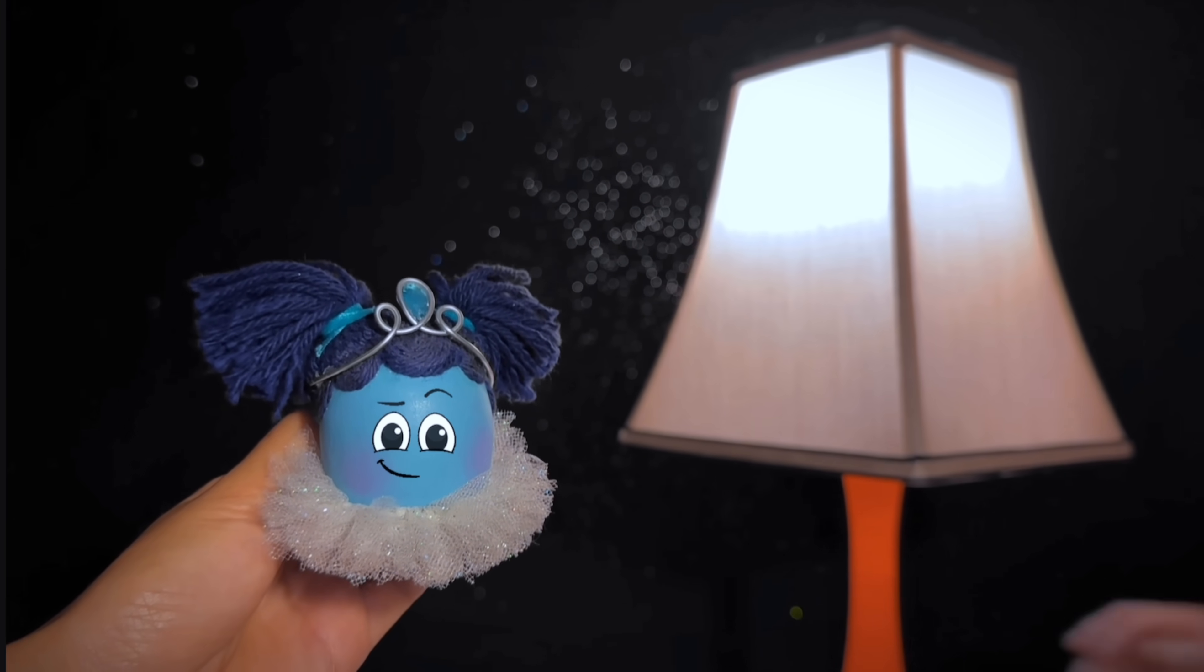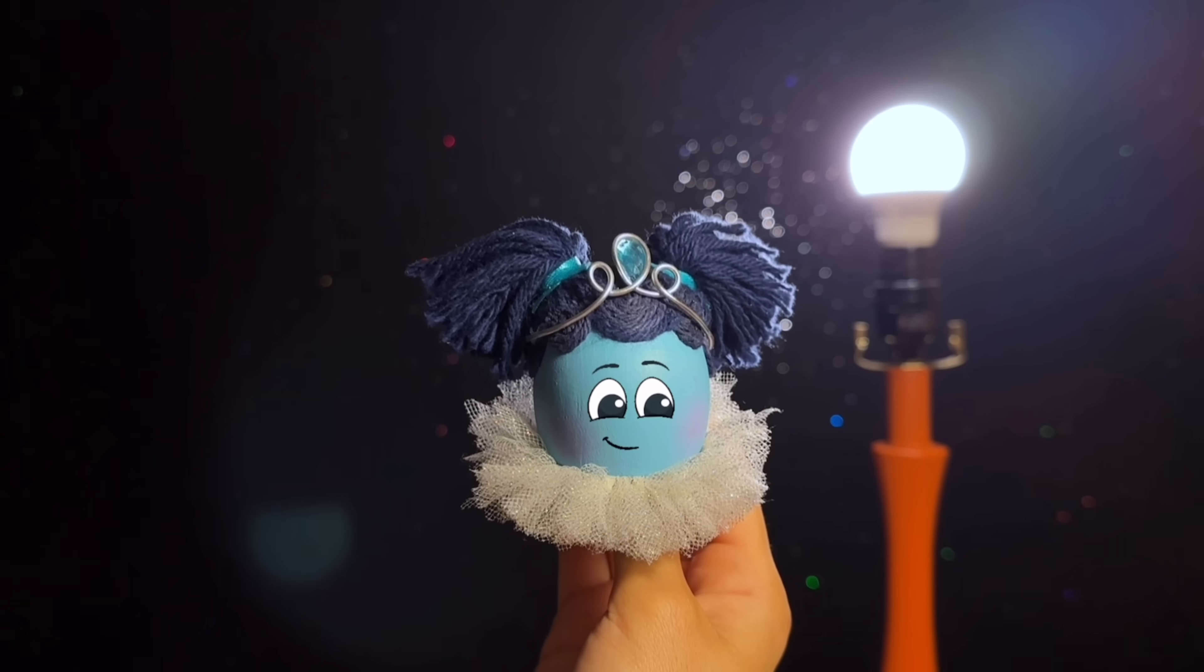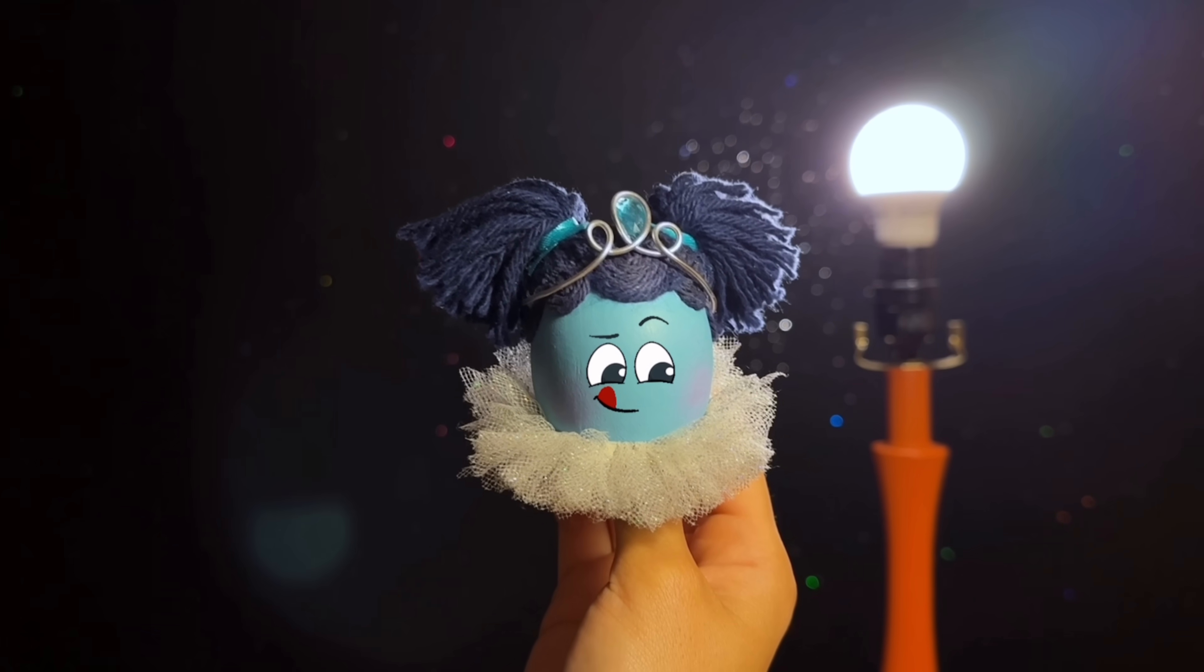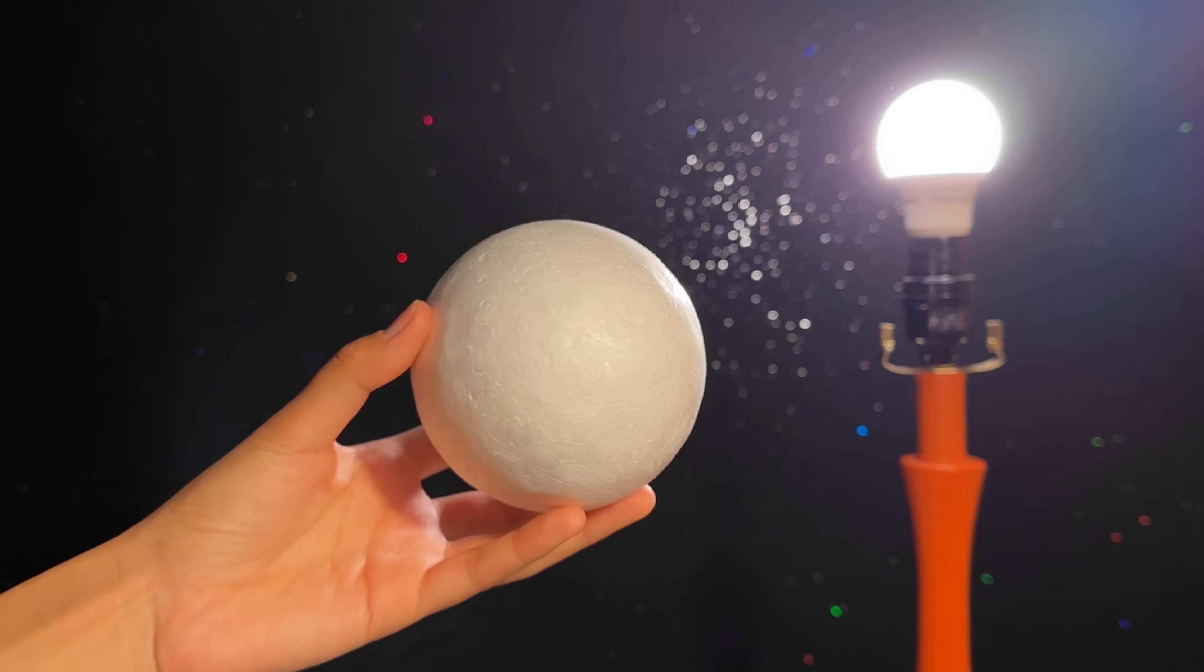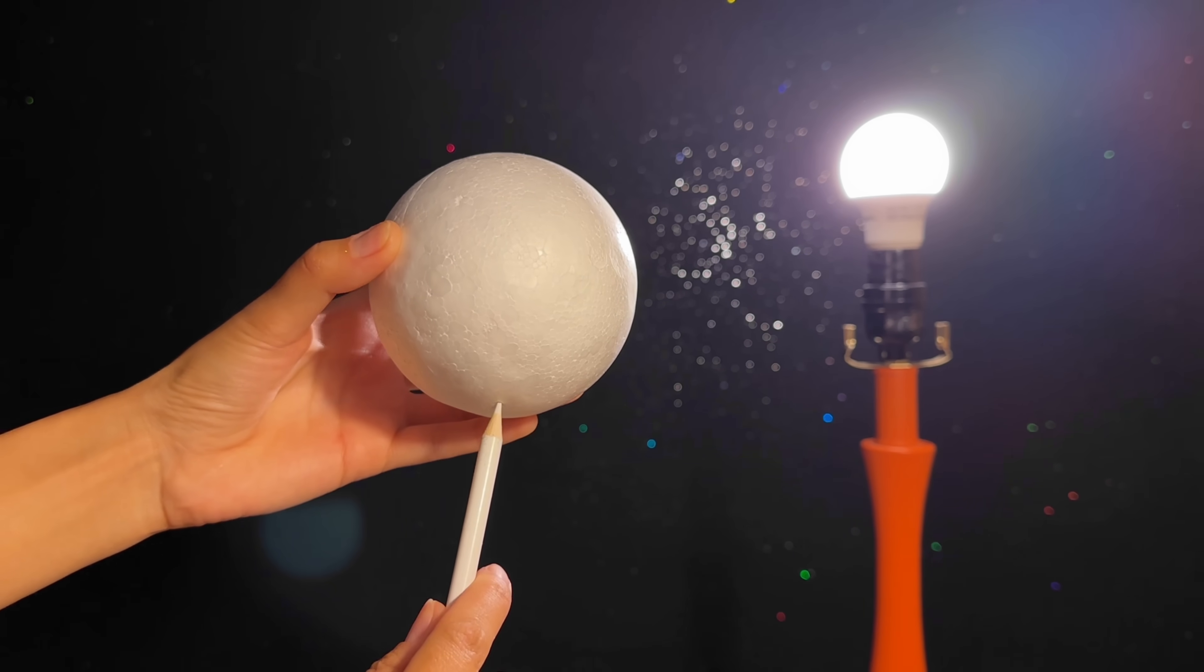First, get a lamp and take off its shade. This will be the sun, giving off a bright light. Then, grab a foam ball and stick a pencil in the bottom.